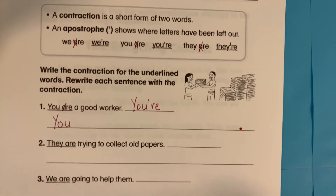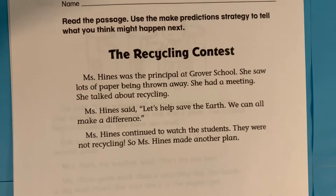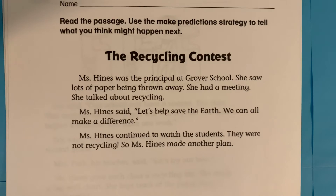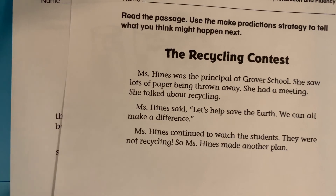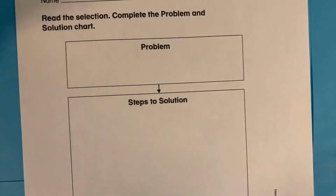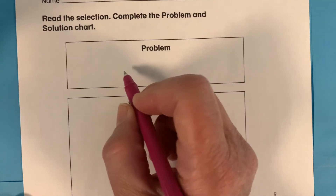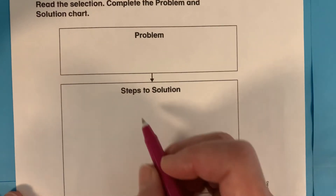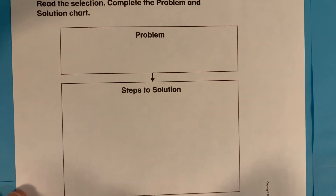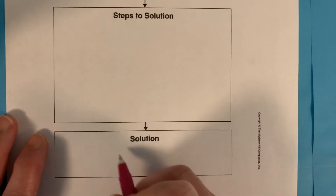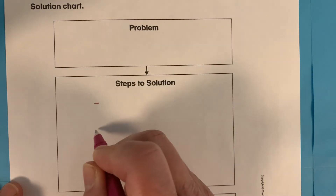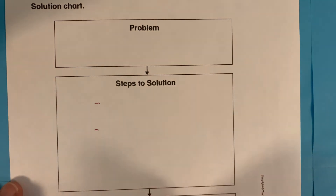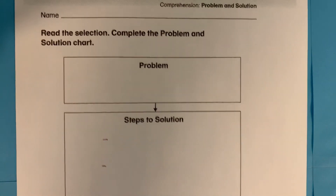All right, the next page is the same story that you had earlier in the week about the recycling contest. But what you're going to do after you read it this time is you're going to decide what the problem was in the story. So write the problem right here in this box, and then write the solution down here — what they did to solve the problem. And then you'll write the steps to the solution in here. All right, that's the lesson for the day.